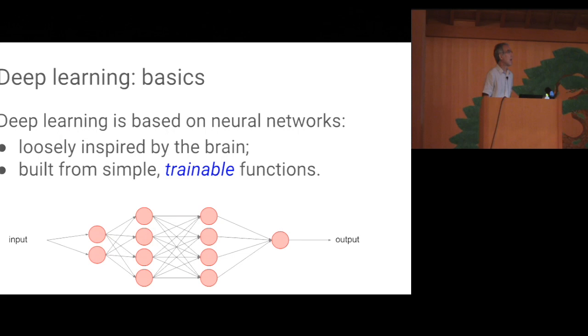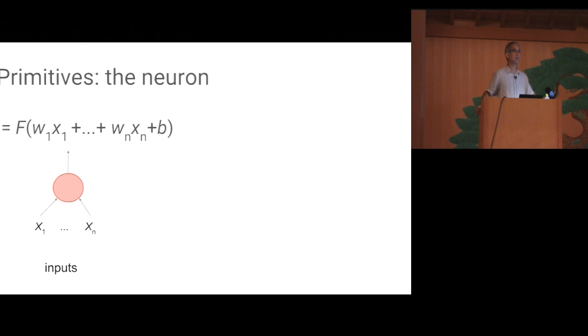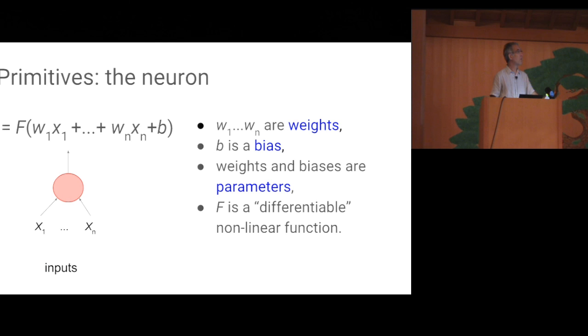Deep learning is based on neural networks, which are loosely inspired by the brain. At their core, neural networks are built from simple trainable functions. Here, trainable means that the functions are parameterized, and there is a process called training or learning, by which we choose good values for the parameters in order to obtain a model that will later be used during inference in the real world. The most basic element, or at least one of the most basic elements in your network is an individual neuron. This is a function that takes some number of floating point inputs and produces a floating point output by taking an affine combination of the inputs and then passing the result of that through some function f.